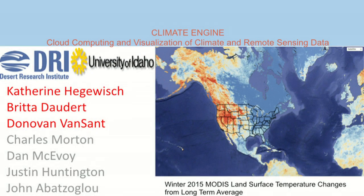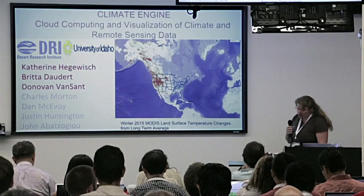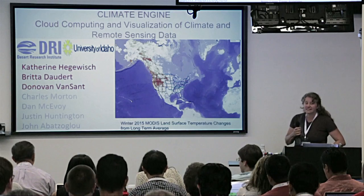My name is Catherine Hegevich, and I'm here today with Britta Doddard and Donnie Van Zandt. I'm here to talk to you about a product we've been developing at the University of Idaho and the Desert Research Institute called Climate Engine. This project started in summer of 2014 when we received a Google faculty research award for our two institutions, led by Justin Huntington and John Abbotsiglou. Our Google contact is Tyler Erickson.